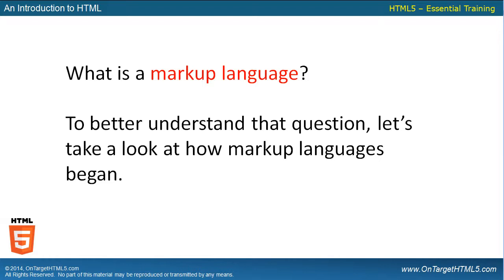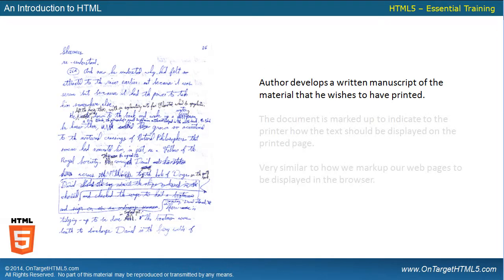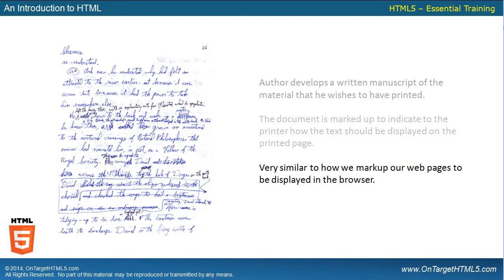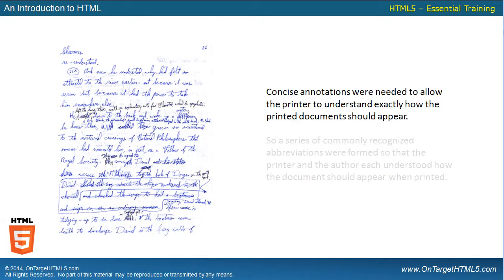So to better understand the question — what is a markup language — let's take a look at how markup languages began. Authors developed a written manuscript of printed material that they wished to have printed, and that's what you'll see on the left-hand side of your screen. The document is marked up to indicate to the printer how the text should be displayed on the printed page. Concise annotations were needed to allow the printer to understand exactly how the printed documents should appear, and that's what we're doing — we make annotations on that page to the printer explaining how we feel the page should be presented when put on paper.